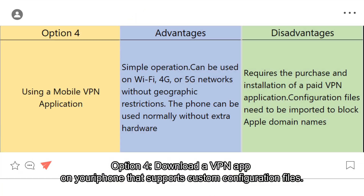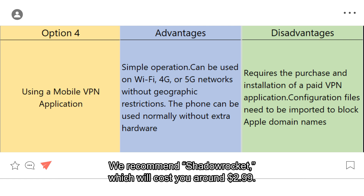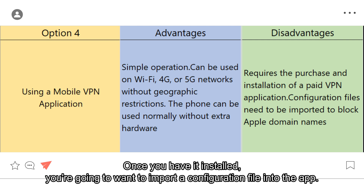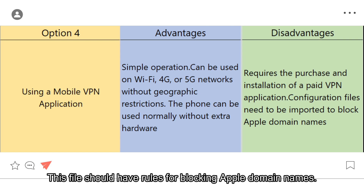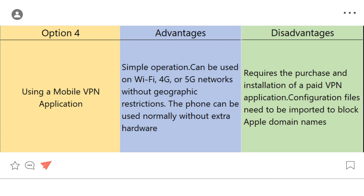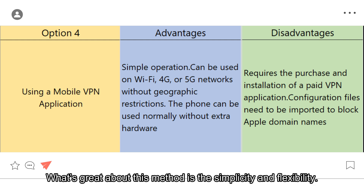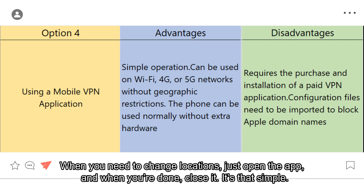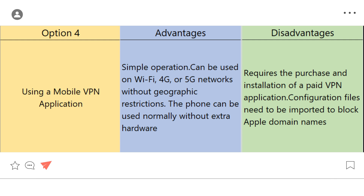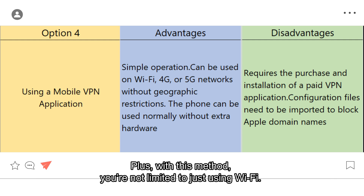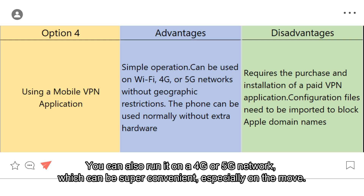Option 4: download a VPN app on your phone that supports custom configuration files. We recommend ShadowRocket, which will cost you around $2.99. Once you have it installed, you're going to want to import a configuration file into the app — this file should have rules for blocking Apple domain names. Activate the VPN and you're good to go. What's great about this method is the simplicity and flexibility. When you need to change locations, just open the app, and when you're done, close it. Your phone will work just as it normally does, and you don't need any additional hardware or complex settings. Plus, with this method, you're not limited to just using Wi-Fi — you can also run it on a 4G or 5G network, which can be super convenient, especially on the move.